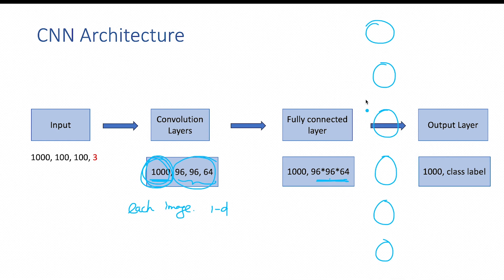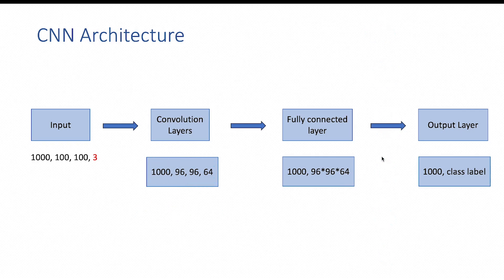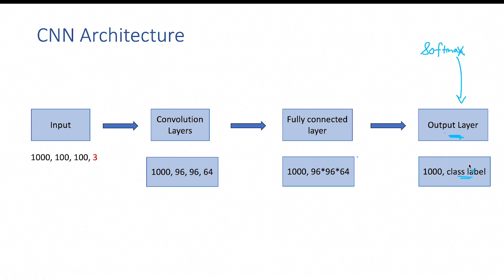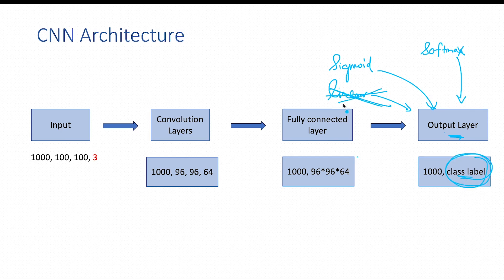All these inputs in the fully connected layer are connected to the output layer. Depending on the activation function used in the output layer, you get a corresponding class label. For a multi-class classification problem, a softmax activation is used to generate relative probabilities associated with different class labels. For a binary classification problem, a sigmoid activation is used. A linear activation would be used for regression problems. Since we have explicitly written class label here, it will be either softmax or sigmoid.